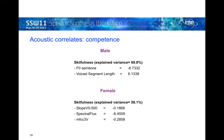Here are the acoustic correlates of competence in male and female TTS voices. To obtain the vocal cues of competence, we look at the acoustic correlates of skillfulness. We do not find any acoustic feature common in both male and female voices. The vocal cues of skillfulness in male voices are lower F0 and higher voiced segment length. Correspondingly, in female voices, the vocal cues are voiced slope, reduced spectral flux, and MFCCs.